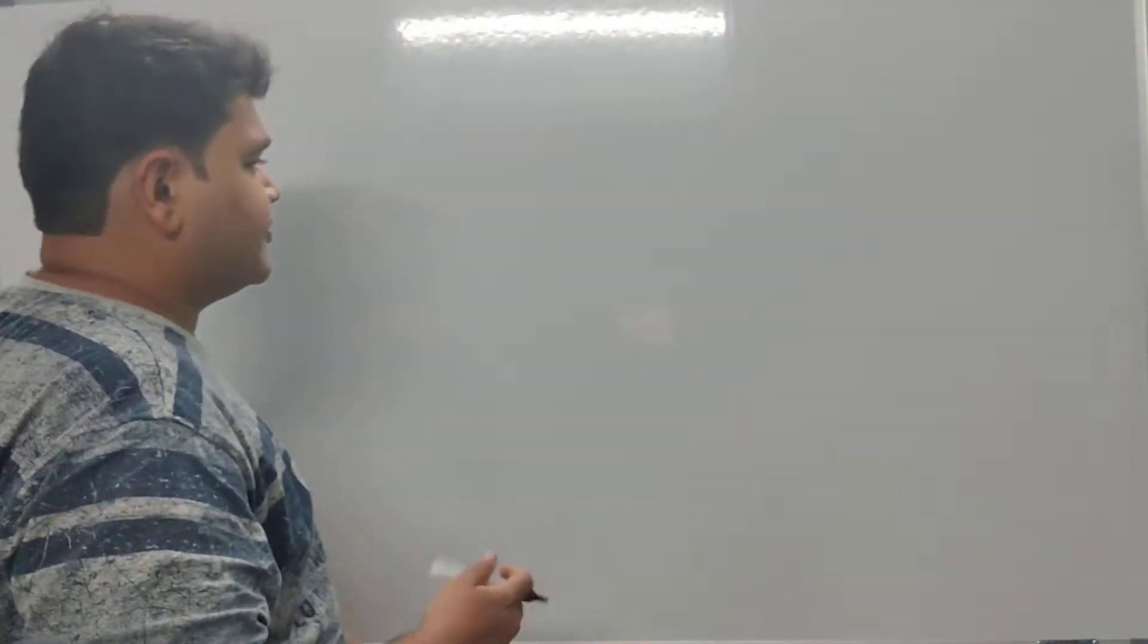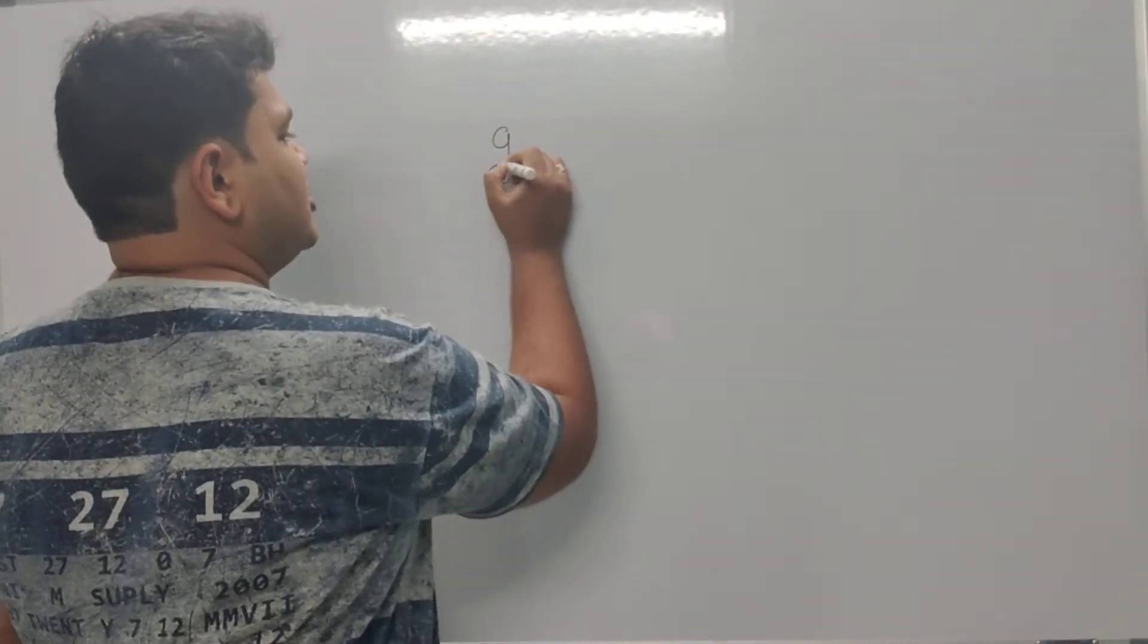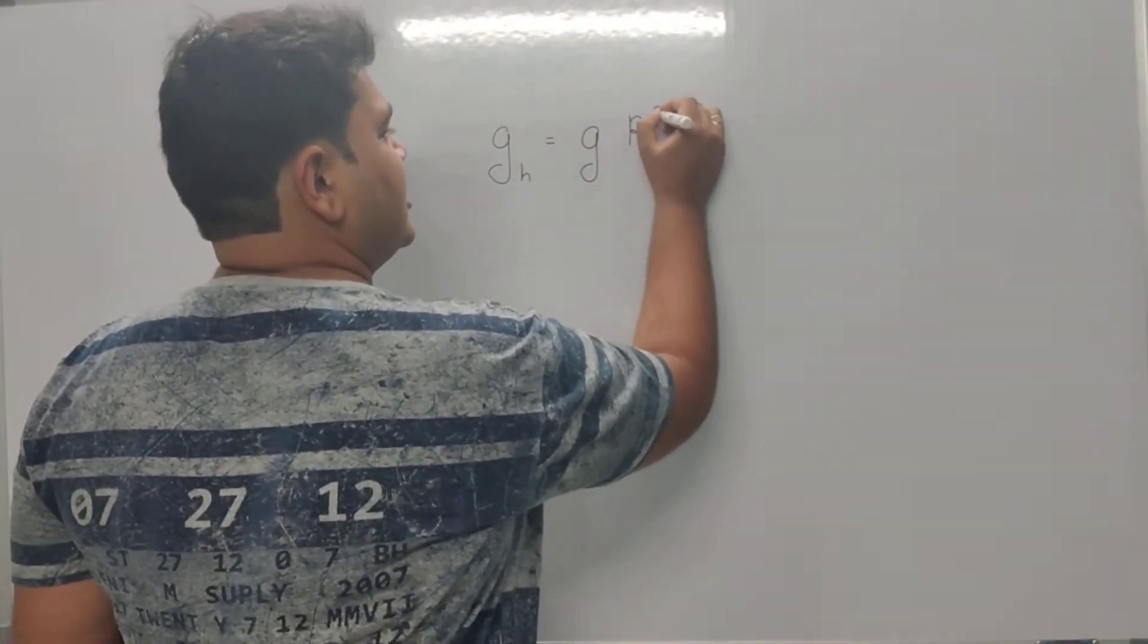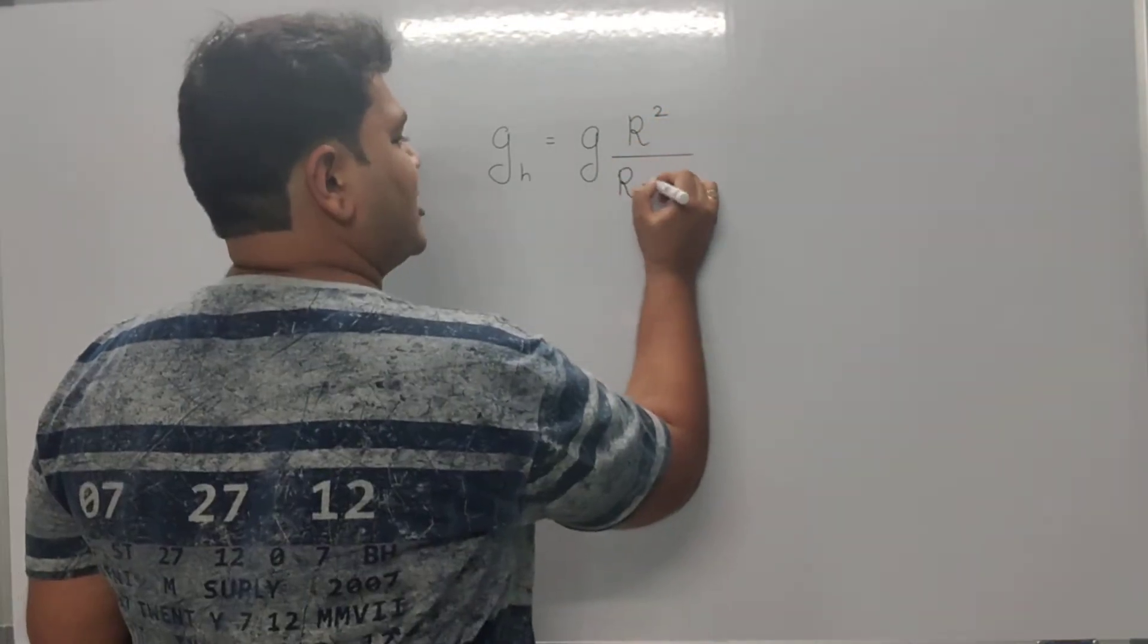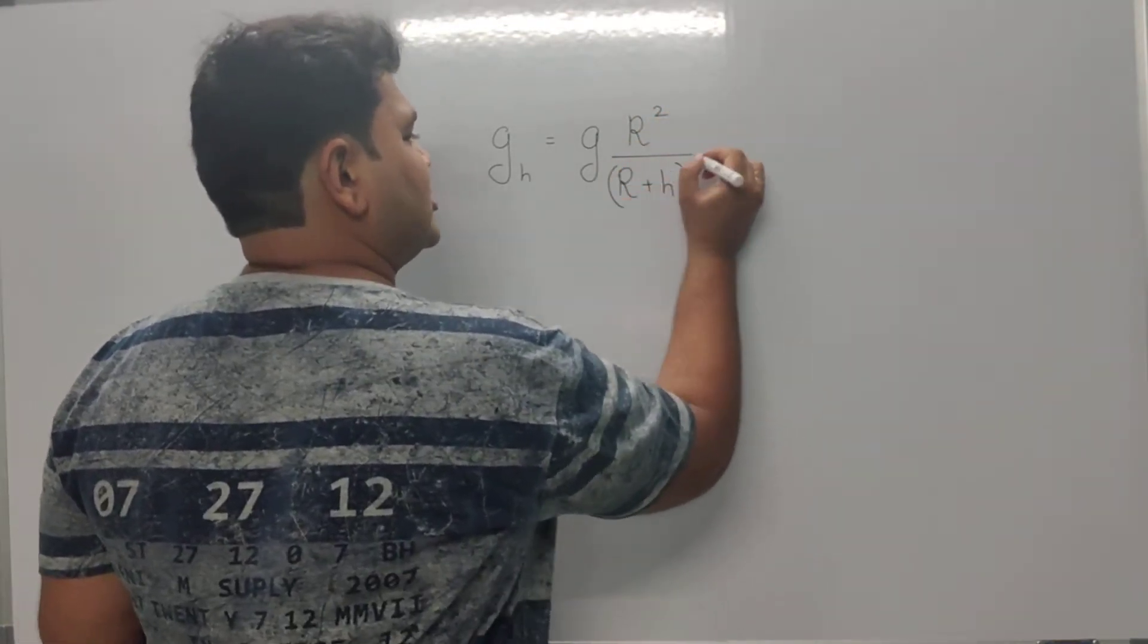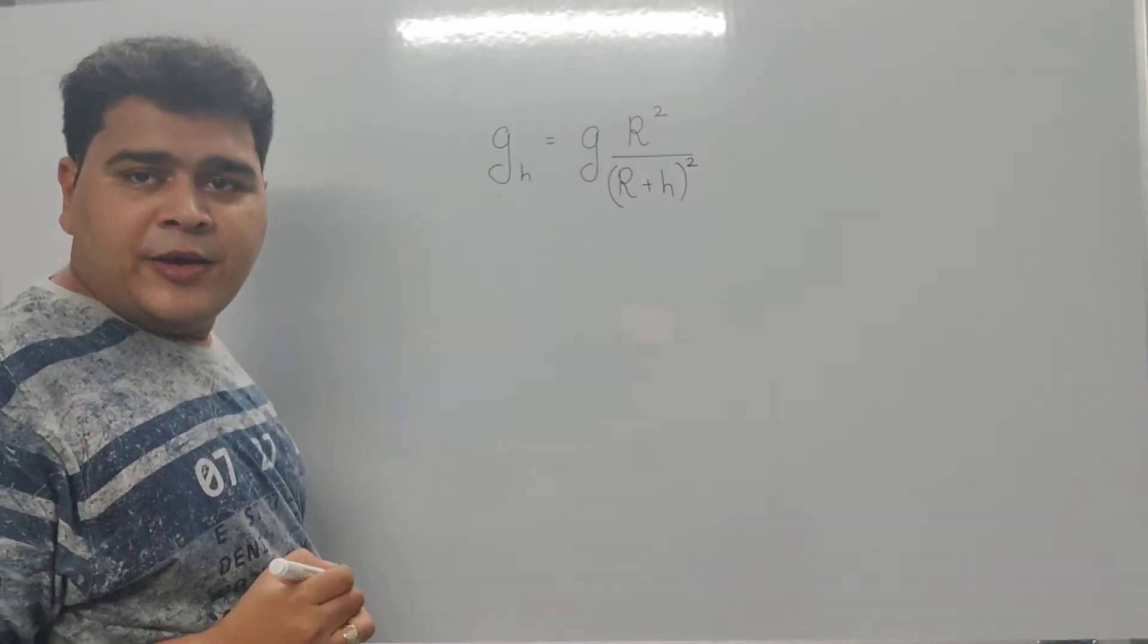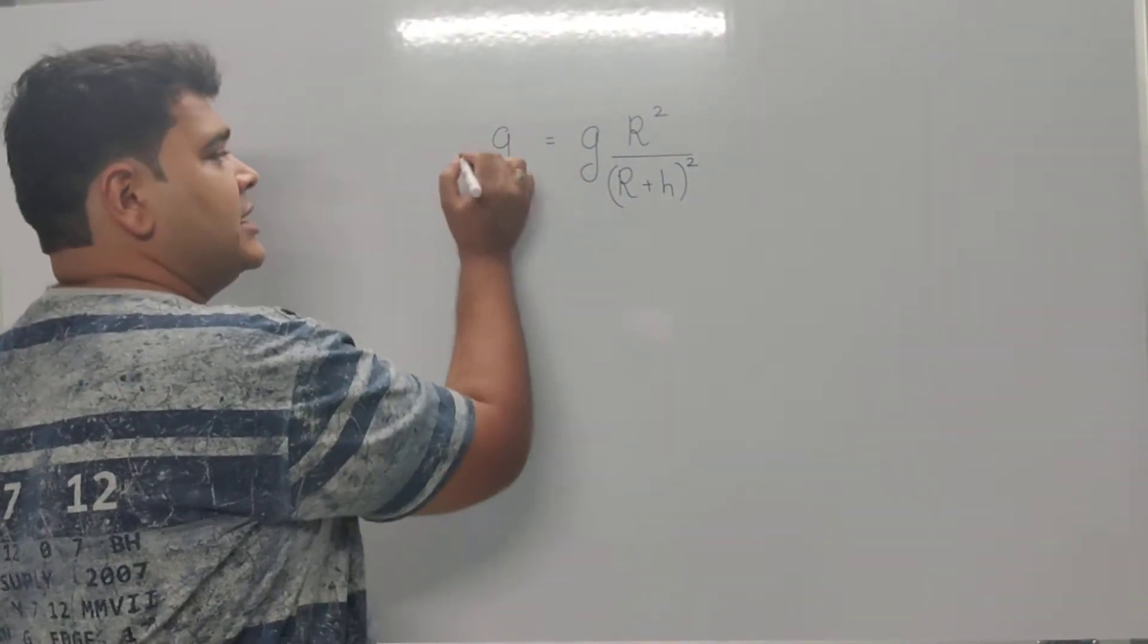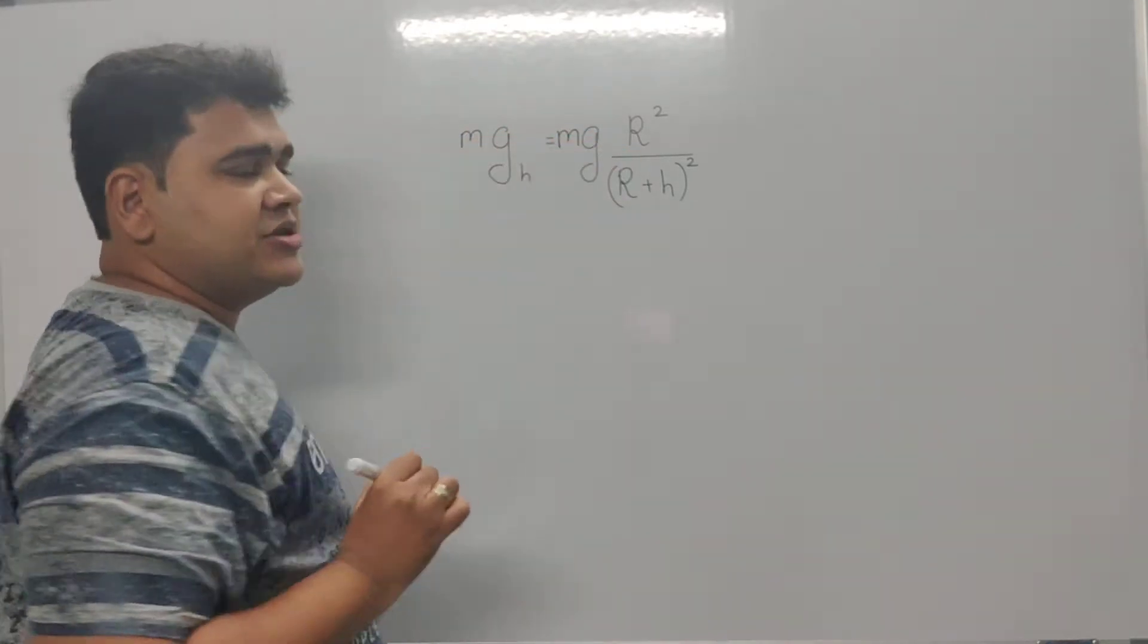We have g at height h is g times R² upon (R+h)². Now if I multiply by m on both sides, I will have mg_h and mg.